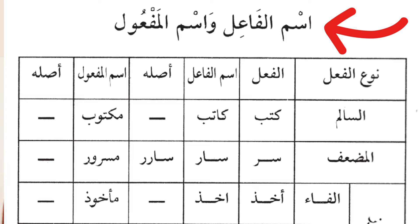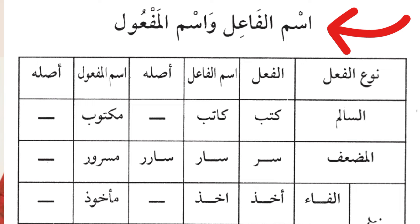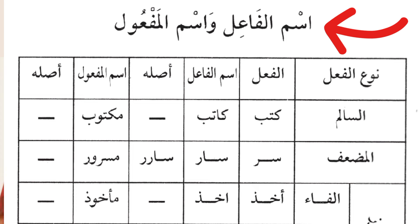We have the heading: ismul fa'il wa ismul maf'ol — the active participle and the passive participle summary. The active participle means the performer of actions, formed from verbs. For example, the word 'fataha' means 'he opened'; 'fatihun' means 'the opener'. The word 'futiha' means 'it was opened'; 'maftuhun' means 'what was opened'.